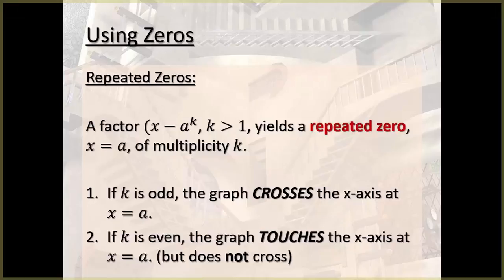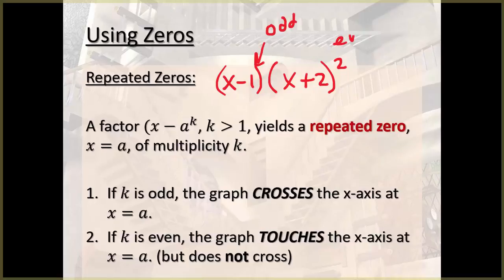All right. So if I had a function x minus 1 and x plus 2 squared, this is an odd multiplicity and this is even. It tells us that at 2, the graph touches and at 1, it crosses.